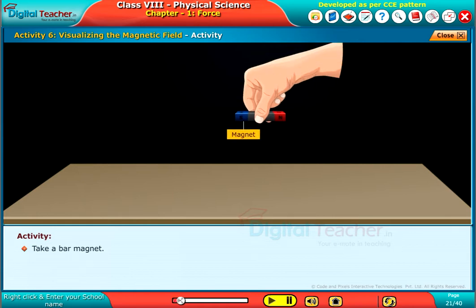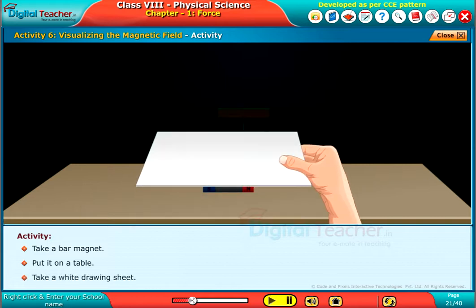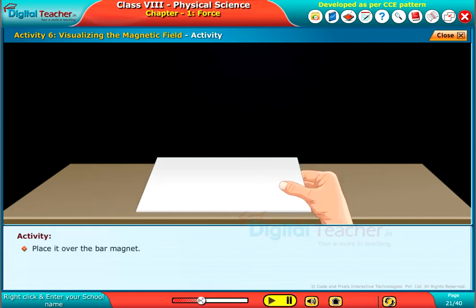Take a bar magnet. Put it on a table. Take a white drawing sheet. Place it over the bar magnet.